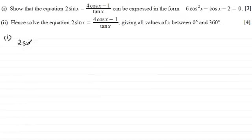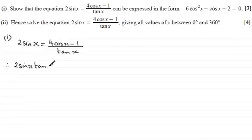That is 2 sin x equals 4 cos x minus 1 and that's all divided by tan x. Now, when I look at the equation that we have to prove, I notice that it hasn't got any fractions in. And we've got a fraction here, it's all divided by tan x. So I want to get rid of tan x first of all. So I'm going to multiply both sides by tan x and that gives me 2 sin x tan x equals just the 4 cos x minus 1.